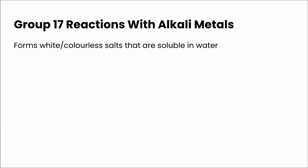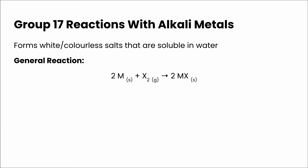Whenever a halogen reacts with an alkali metal it forms a white or colorless salt that is soluble in water. The general reaction is: 2 alkali metal + X₂ → metal halide. For example, 2 sodium + Cl₂ reacts to give 2 sodium chloride.